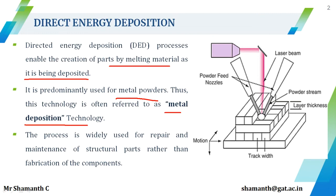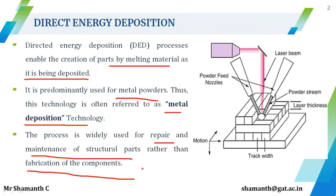This process is widely used for repair and maintenance of structural parts. All the other six categories of additive manufacturing we have already discussed create parts, but this process is used for fabrication and repairing of parts — that is one of the important distinctions of direct energy deposition.